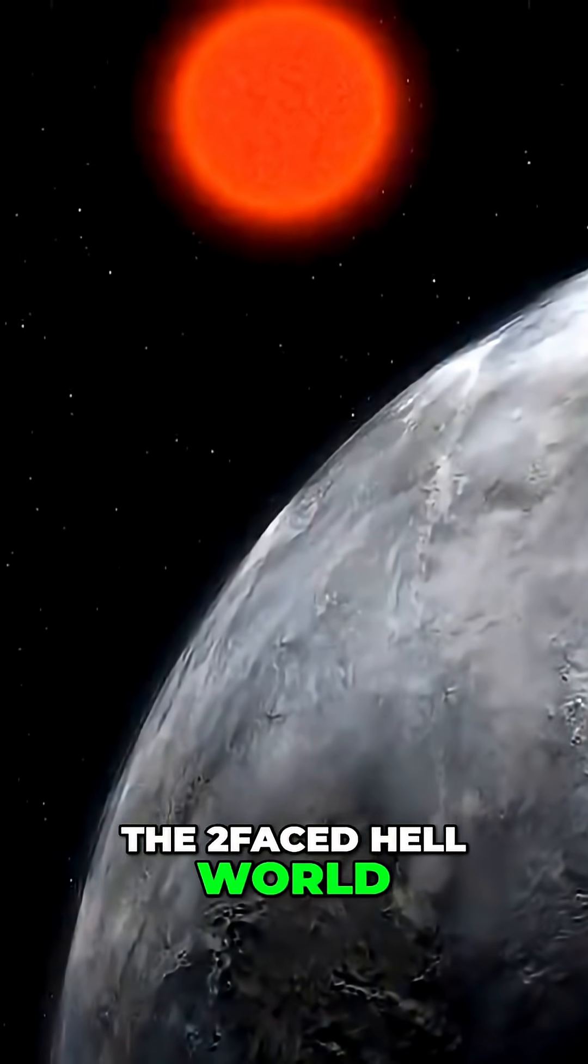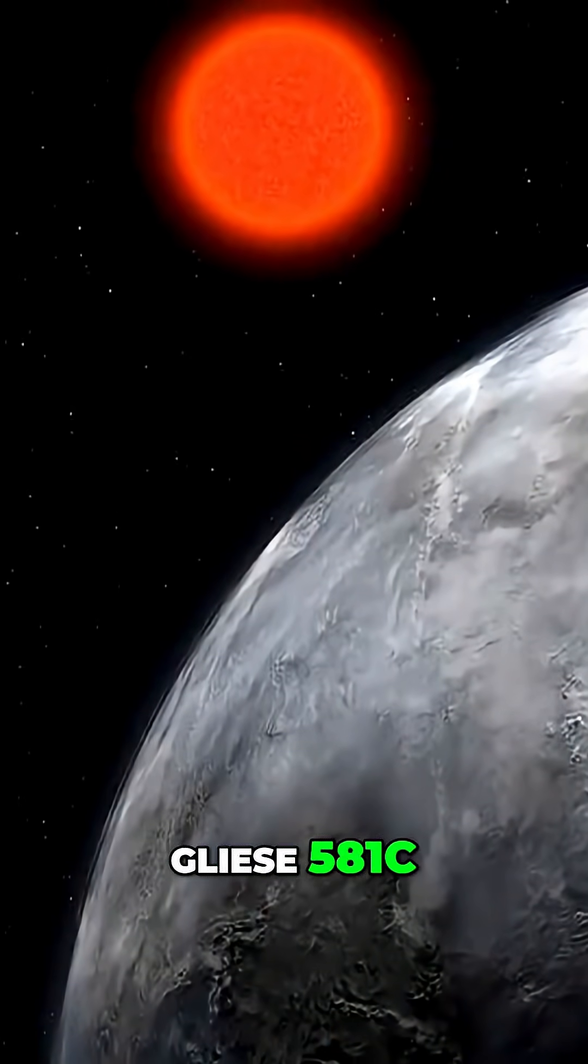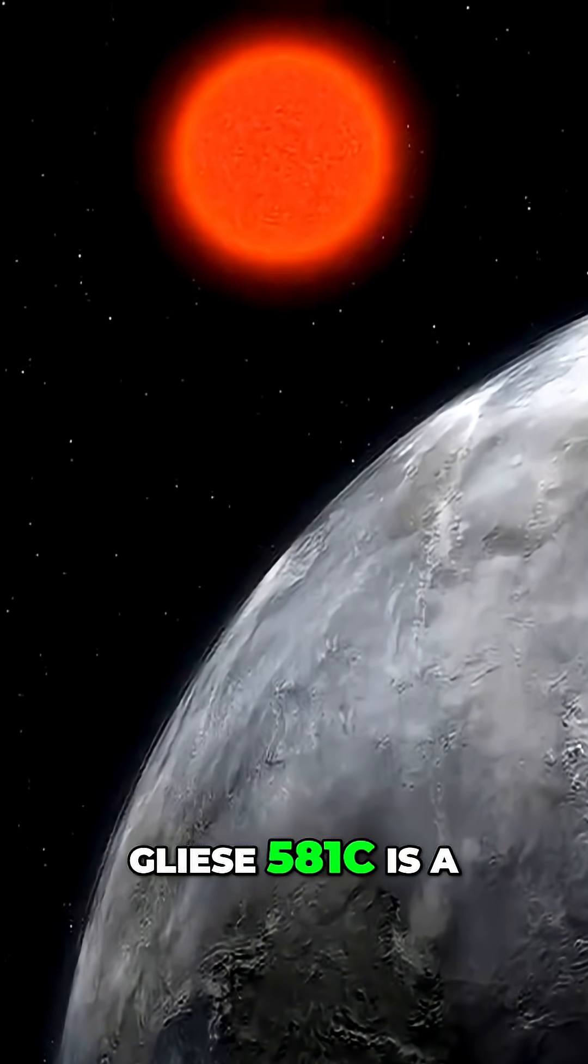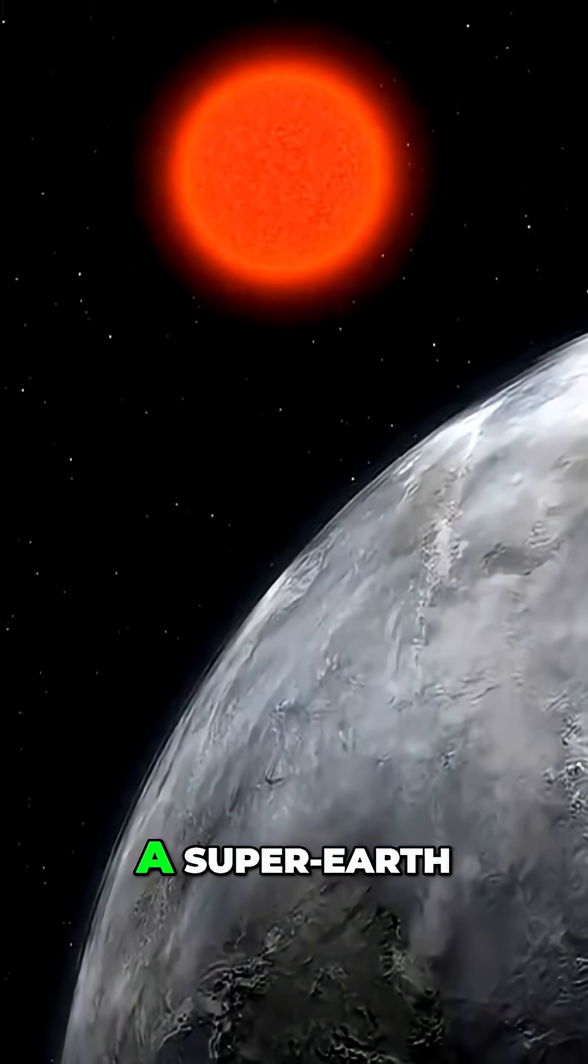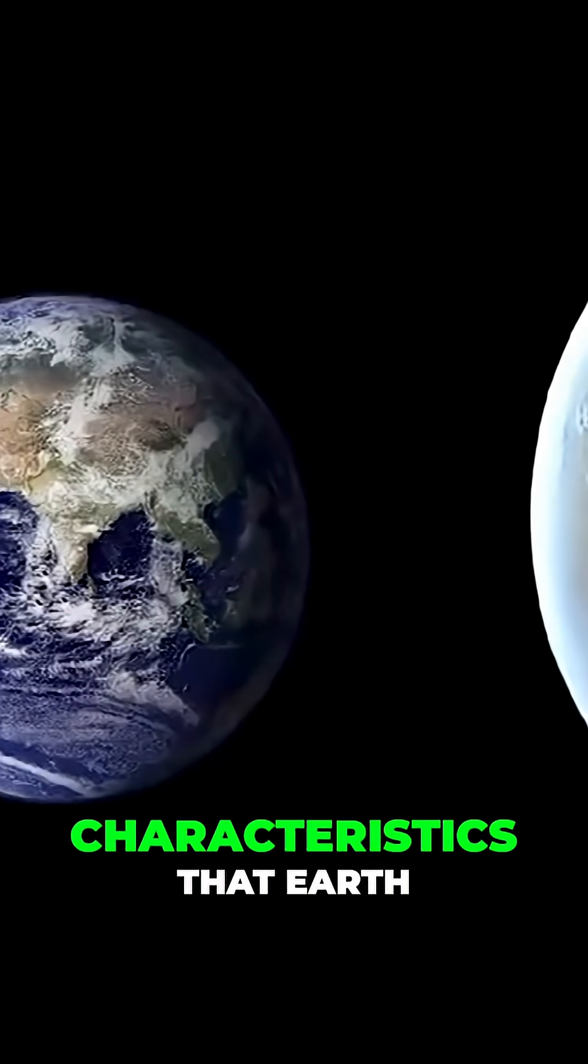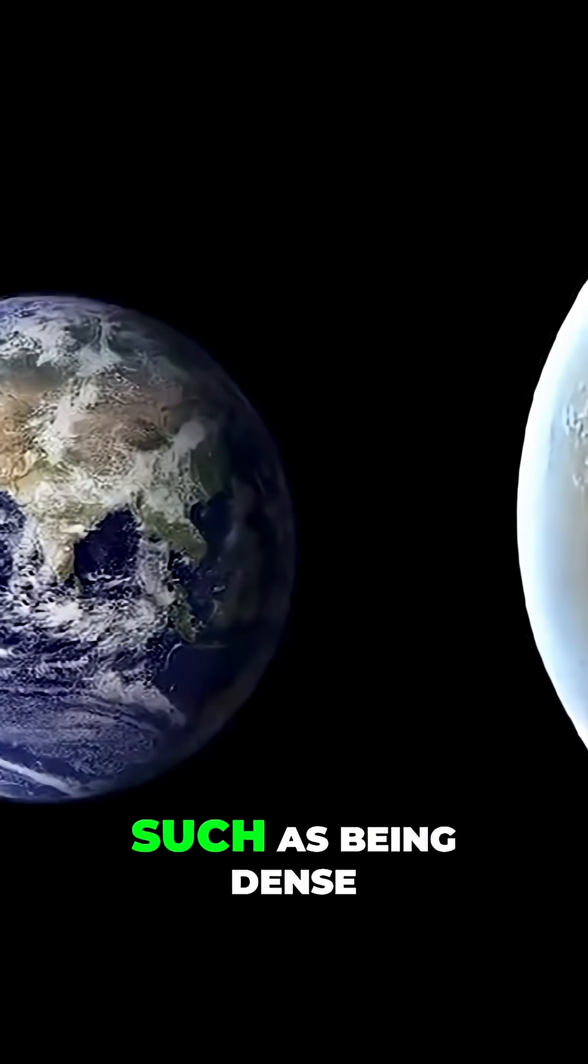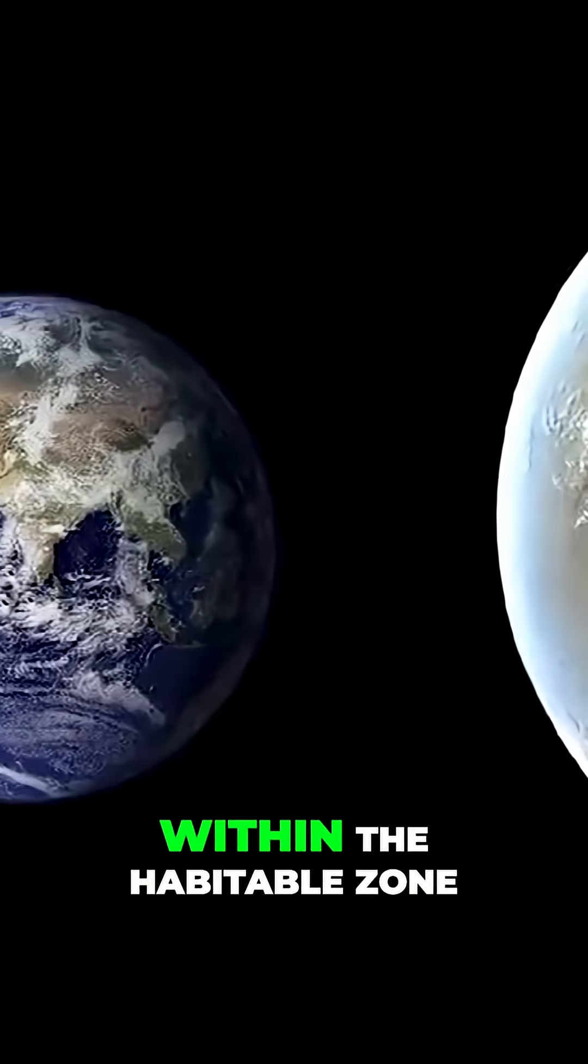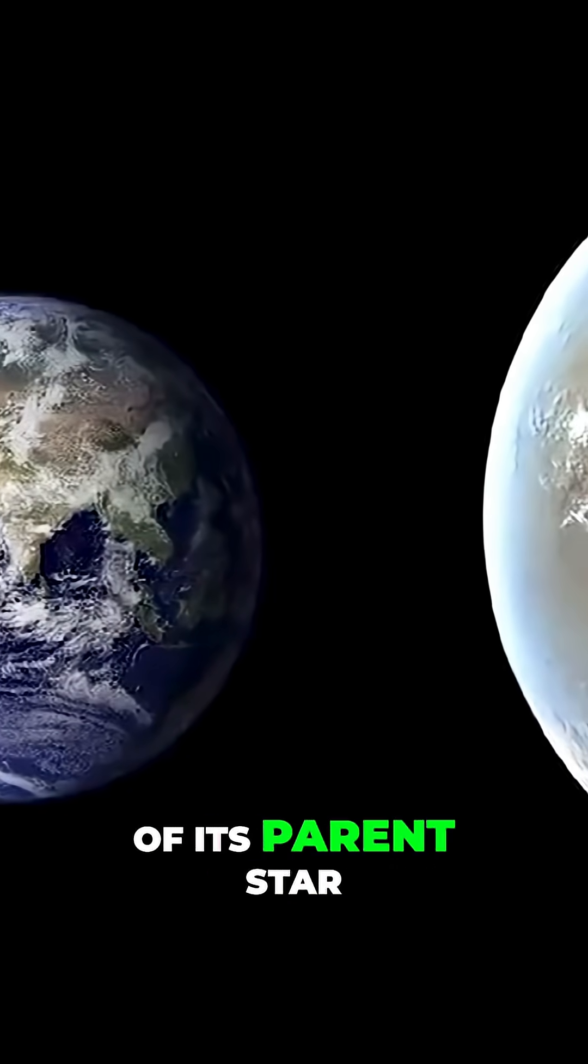The two-faced hellish world, Gliese 581c. Gliese 581c is a type of exoplanet called a super-Earth, meaning that it has many of the same characteristics that Earth has, such as being dense and rocky, as well as being within the habitable zone of its parent star.